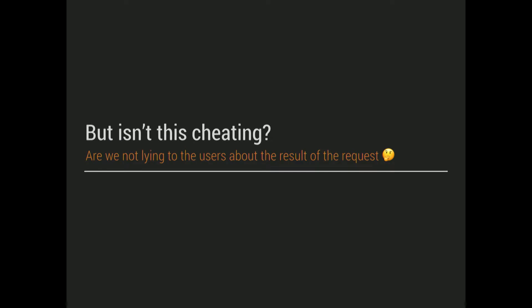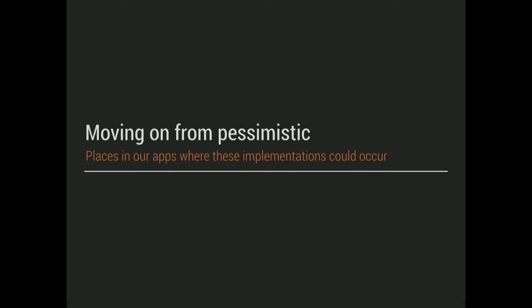Some people I've spoken to about this say, isn't that just cheating? Aren't you just lying to your users? And no, because it's about how you convey it. If something goes wrong, you let them know. And if you are carrying out a network request, they need to know that something is happening. You can't just shift it to the background and not keep them aware, because they might switch on airplane mode or something without knowing. So the user needs to know that something is happening in your app to do with syncing.